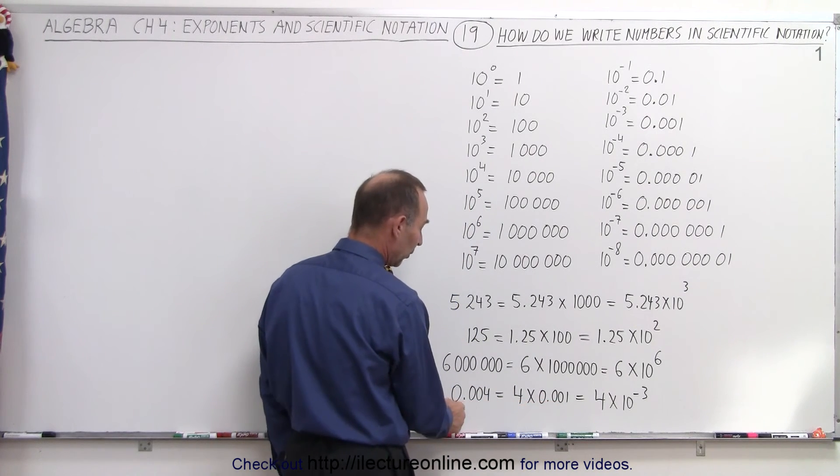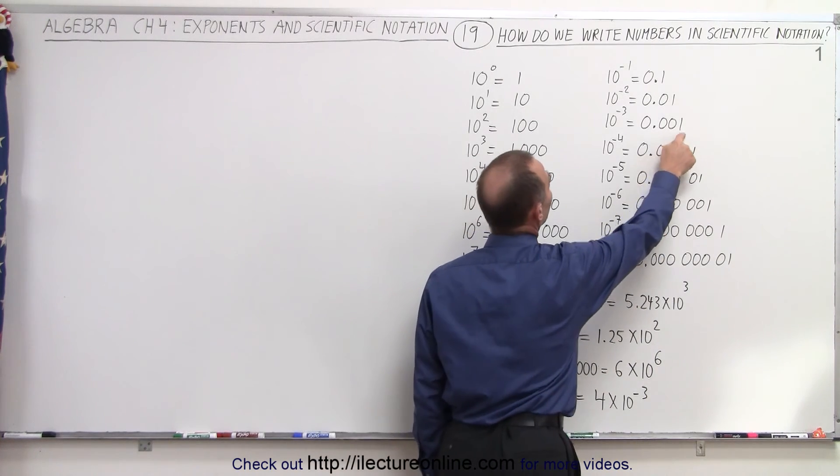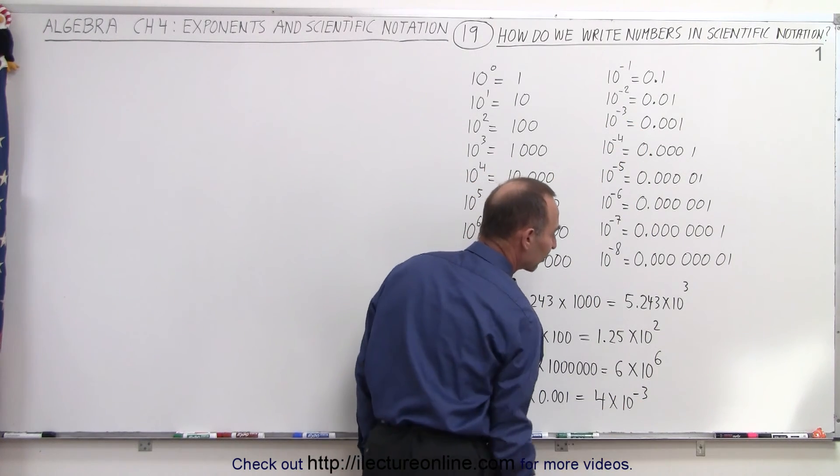If I multiply this times this, I get 0.004 again. But instead of writing 0.001, I go over here and I can replace it by 10 to the negative 3. So I can write this as 4 times 10 to the negative 3.